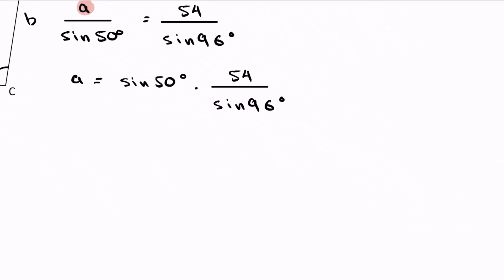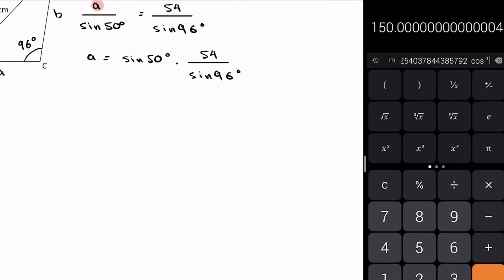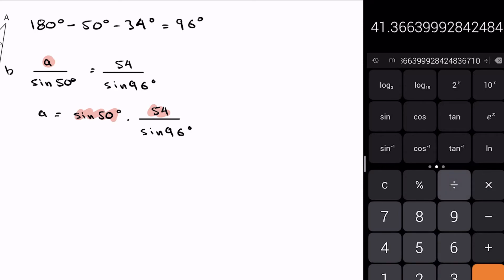At this point I think I can pull out my calculator. I'm going to do 50 sine and multiply that by 54. Remember I'm just multiplying my sine 50 by the 54, that gives me that number, and then I'm going to divide by 96 sine, which gives me 41.59.